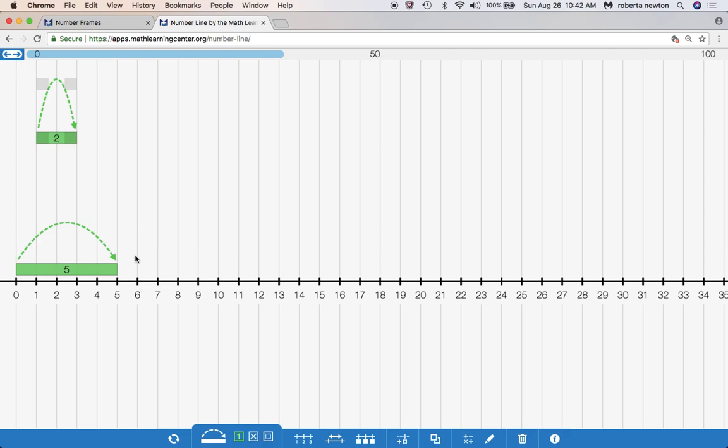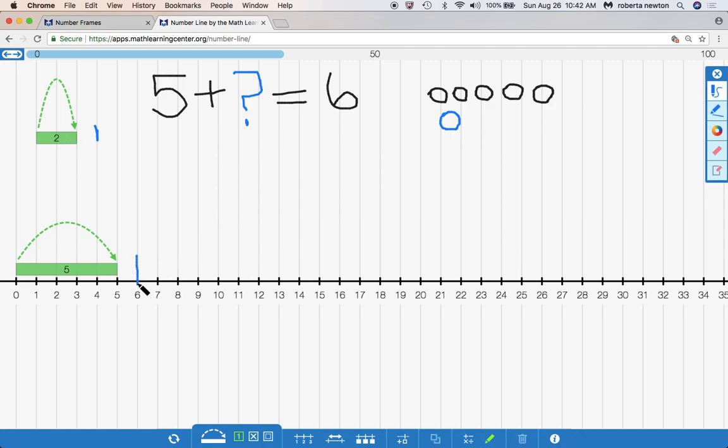I'm trying to get to six. Can we see that? I'm going to mark that really quick. I'm trying to get here. Can you guys point to that on your number lines? We have to do a jump, however many jumps to get to this number.